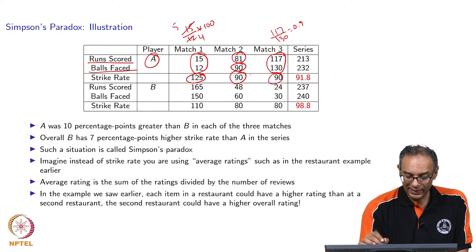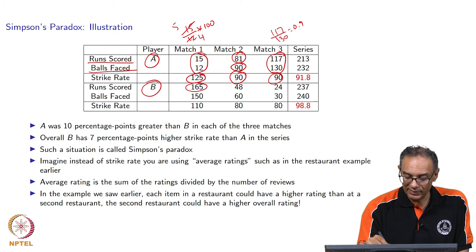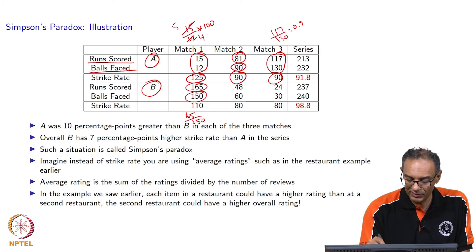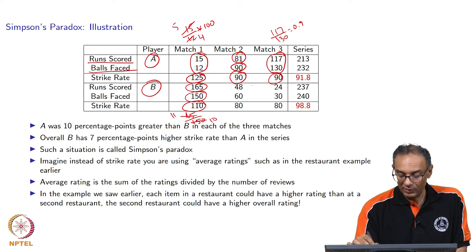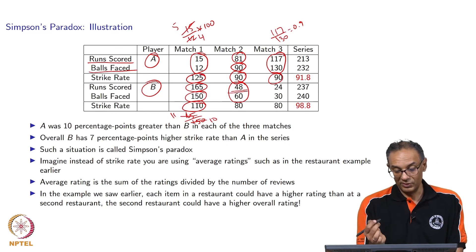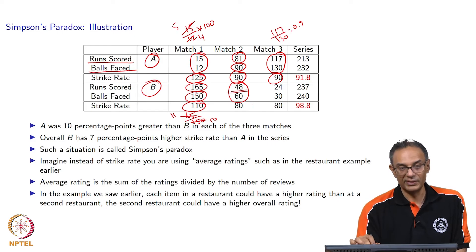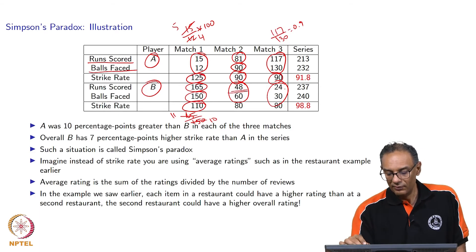Now let us look at Player B. Player B scored 165 in 150 balls — 165 divided by 150: both are divisible by 15, giving 11 over 10, so the strike rate is 110. In the second match, B scored 48 out of 60 balls — 48 over 60 is 0.8, so the strike rate is 80. In the third match, the player scored 24 in 30 balls, so the strike rate is 80.